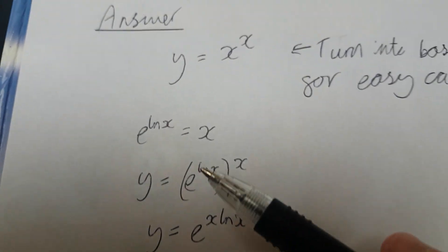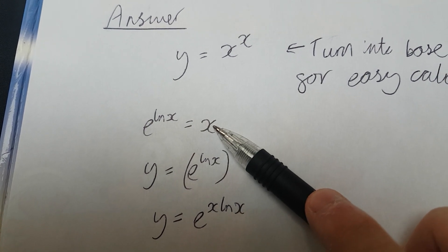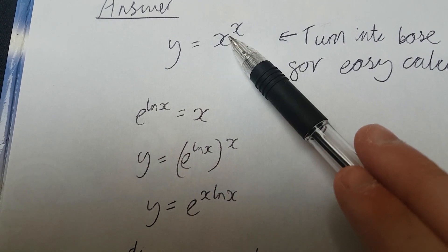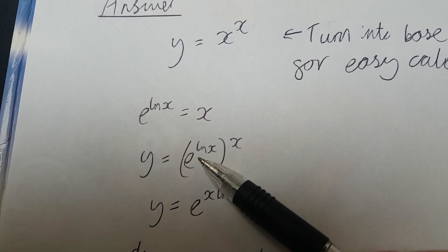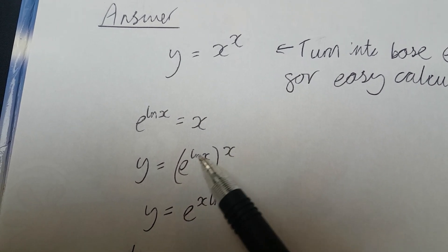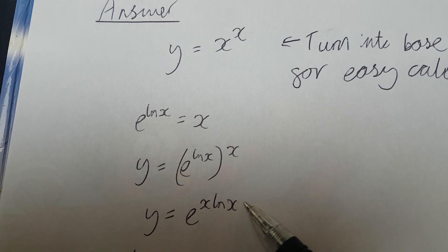So, here's the thing, we know that e to the natural log of anything equals itself, or equals that thing, that's one of the rules, because these are inverse functions. So, we replace this original x up here with e to the natural log x, and we know this is to the x, so we put it here. And using our power rules, we can multiply these together, so we know y equals e to the x natural log x.